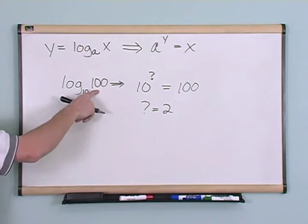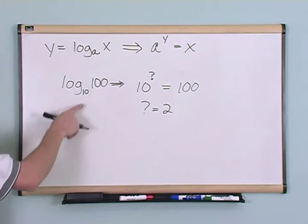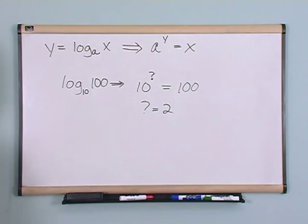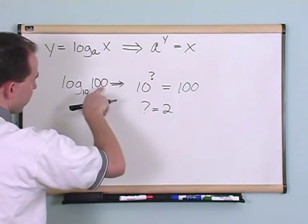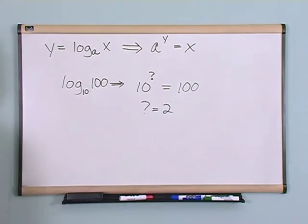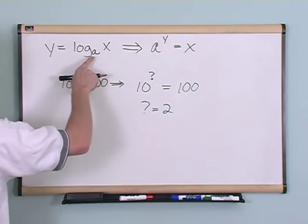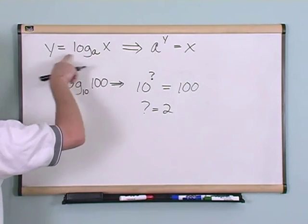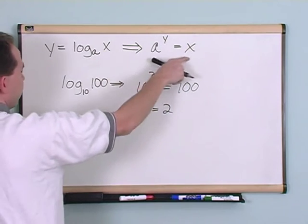So if you take 100 and you press the log button, which is implied a base 10 there, it's going to put a 2 there. Because 10 to the what power equals this? Well, that's 2. And that's what I mean here. A to the y power equals x. That's what this relation means here.